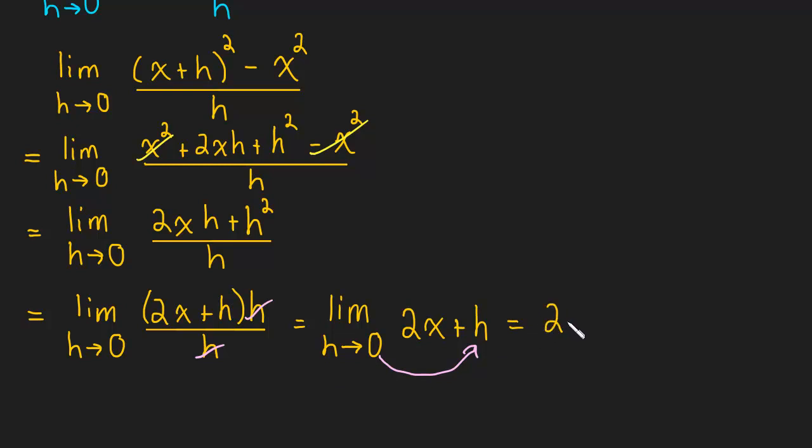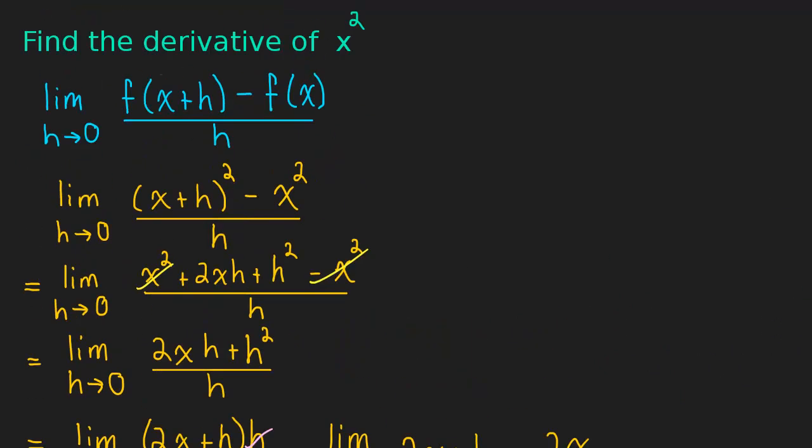So this is going to be 2x plus 0. But of course plus 0 doesn't contribute anything. So the final answer is 2x. So the derivative of x squared is 2x.